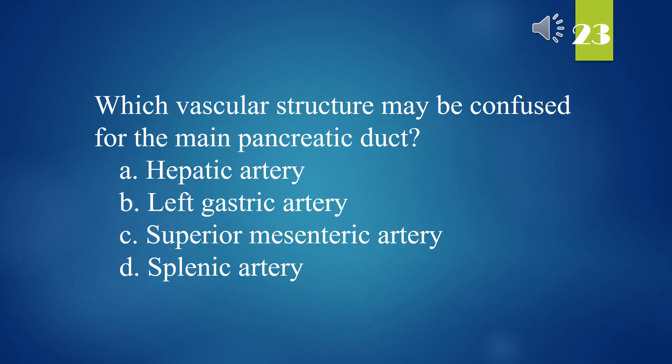Which vascular structure may be confused for the main pancreatic duct? A. Hepatic artery. B. Left gastric artery. C. Superior mesenteric artery. D. Splenic artery. The answer is D. Splenic artery.